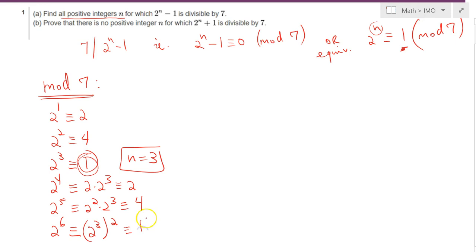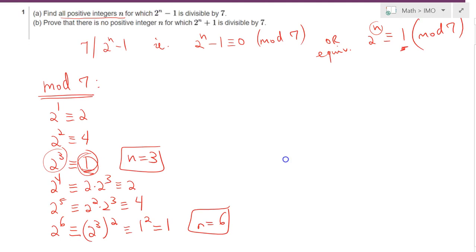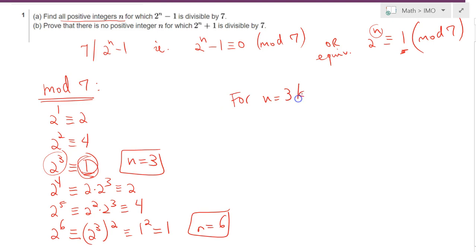In fact, it is possible knowing that 2 cubed is congruent to 1 to observe that for n equals 3k, for the multiples of 3, our expression would be 2 to the 3k, which is simply 2 cubed to the power k.